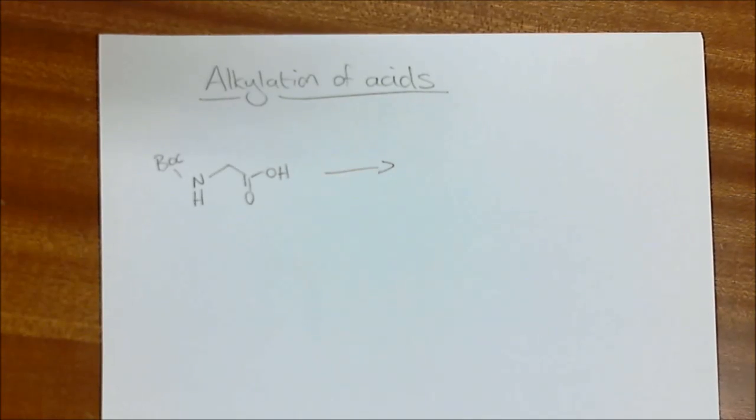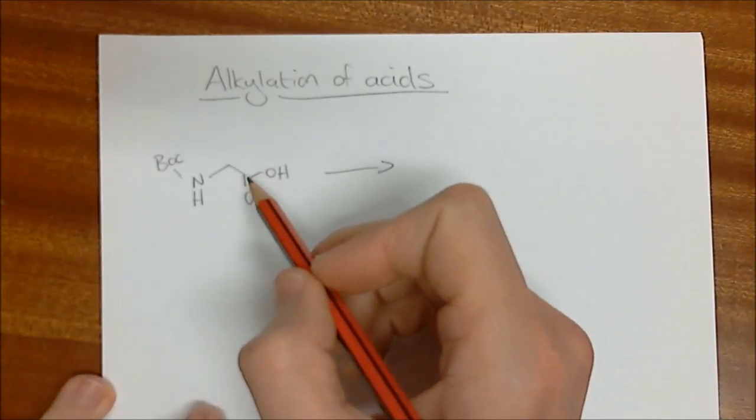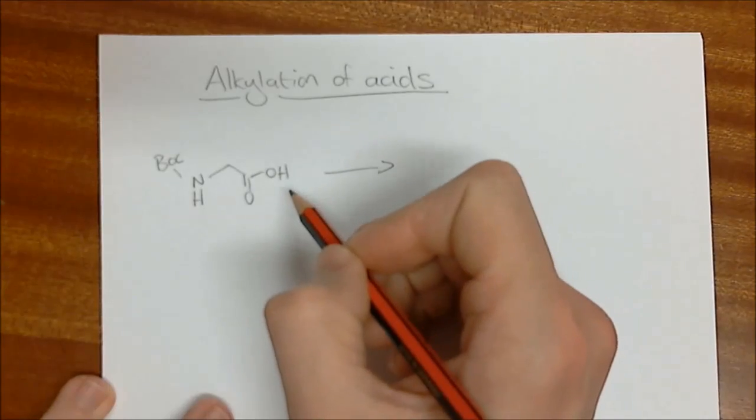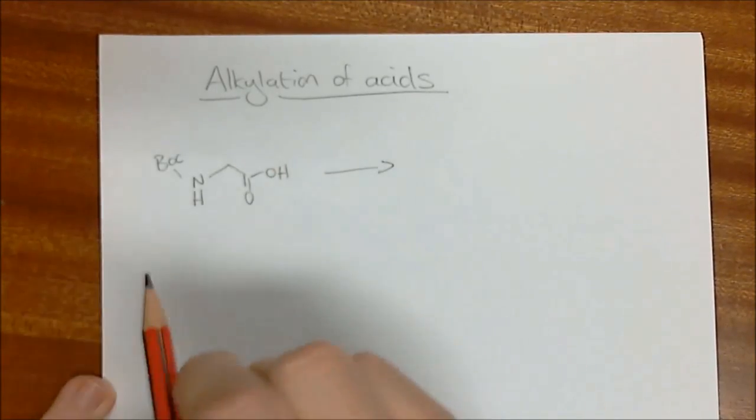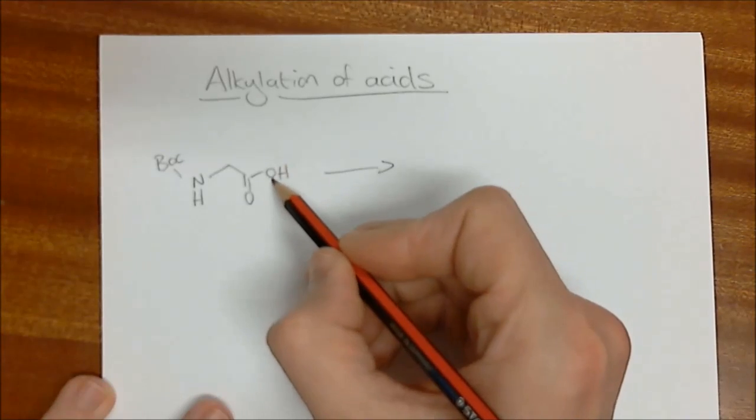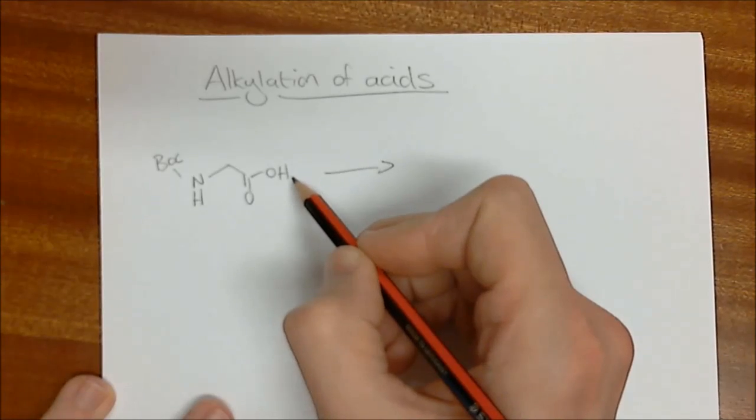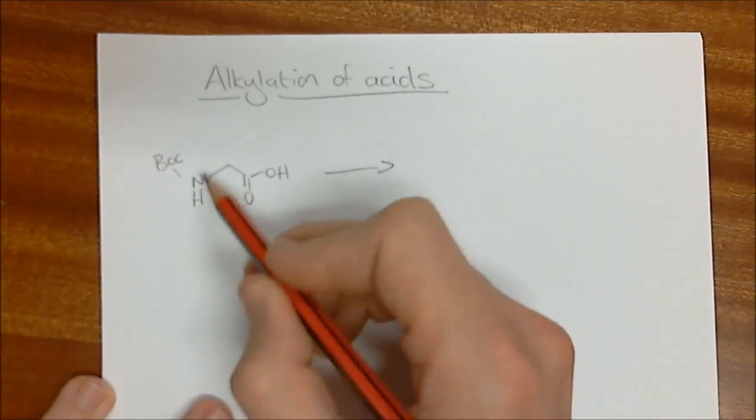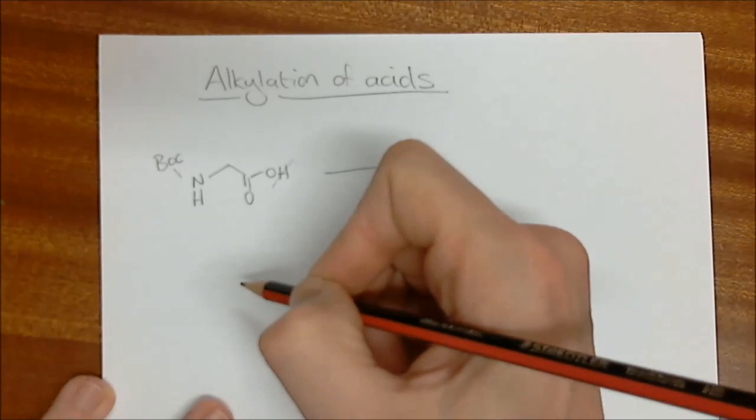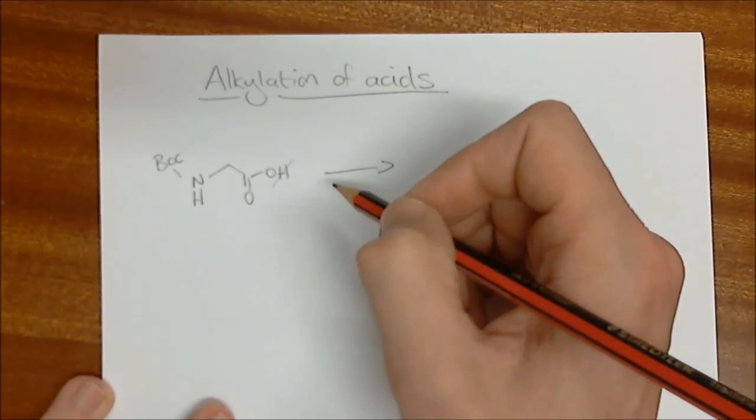Alkylation of acids - by this we're meaning carboxylic acids. We need to remember that the carboxylic acid proton is the most acidic proton in this molecule, and so if we add one equivalent of base, this proton is going to be whipped off first. So we're going to have to add two equivalents of base.